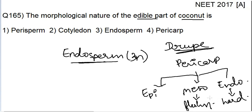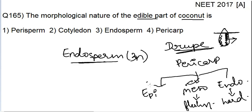Have you ever seen a coconut fruit that is cut? Whenever you drink coconut water, you first take off the top. You can see a white fleshy part — that is nothing but the mesocarp. The epicarp is nothing but the green skin that covers the outside.